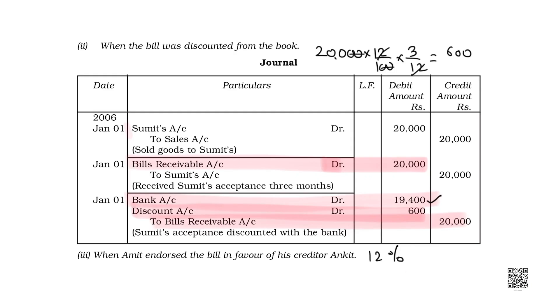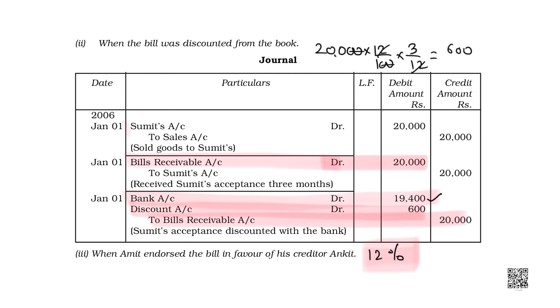Discounted means getting the payment from the bank before the maturity date, but on a condition. The condition is that the amount would be a bit less, and that reduction is determined by the rate of interest provided in the question.